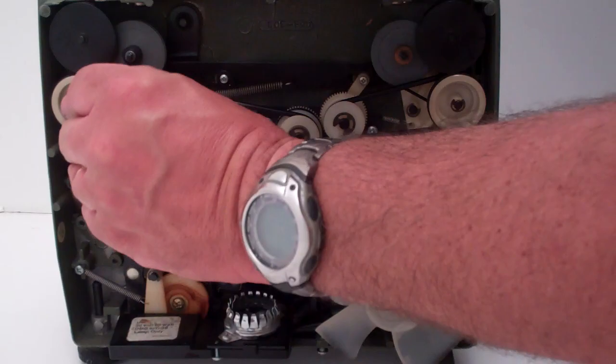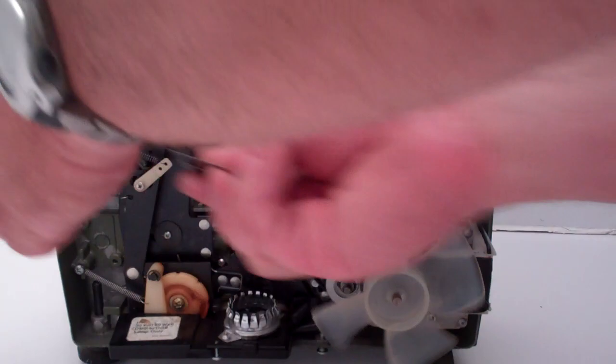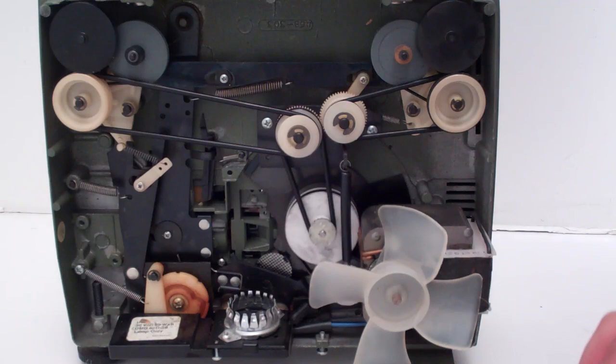Now you've got the rewind and fast forward tires. The easiest thing probably for you to do is take a razor blade and cut it. There you go. Pull that out.